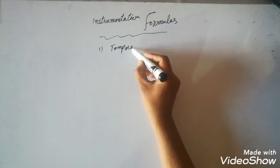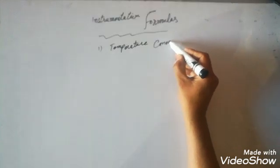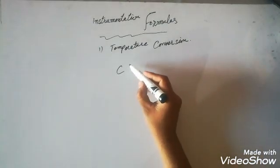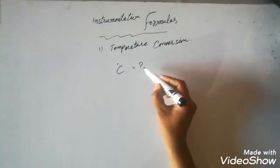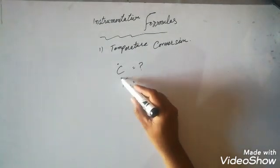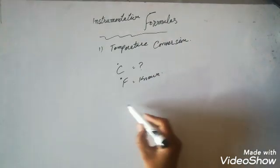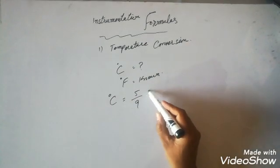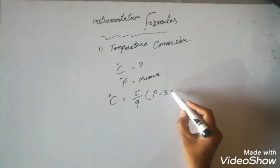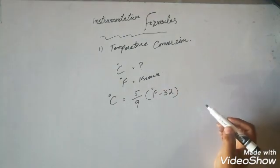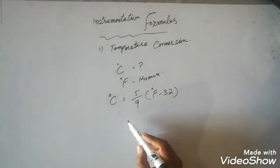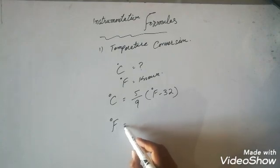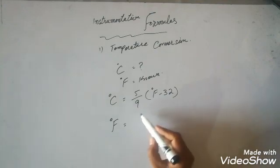First of all we will see the temperature conversion. If we want to calculate the temperature in centigrade and we have some reading in Fahrenheit, then we will use this formula: Centigrade is equal to 5/9 multiplied by (Fahrenheit minus 32). In this way we can convert Fahrenheit into centigrade.